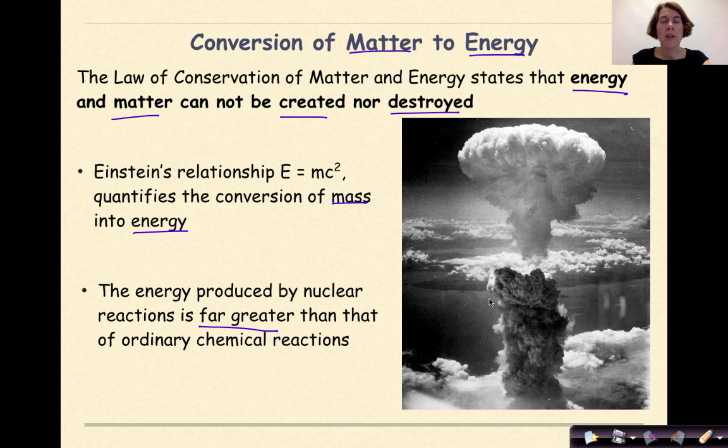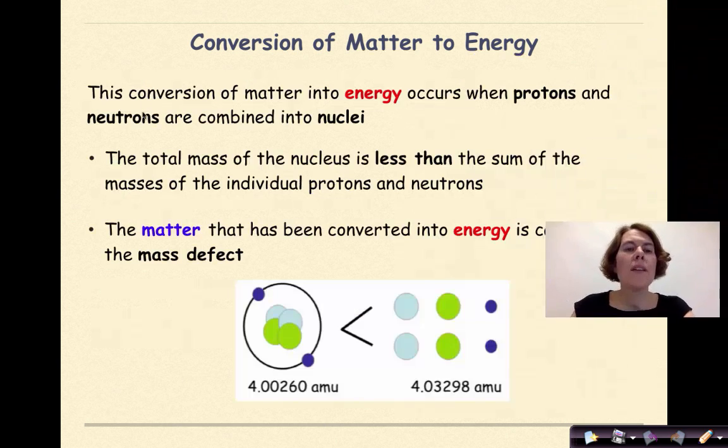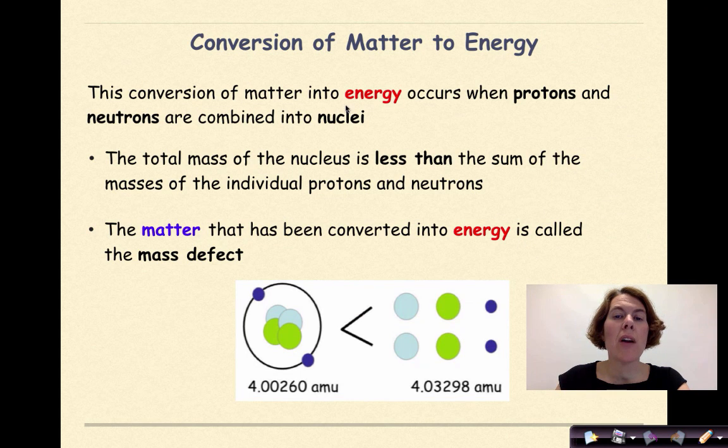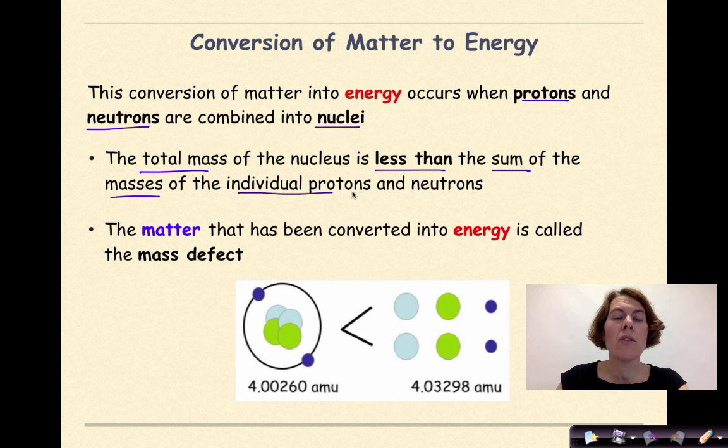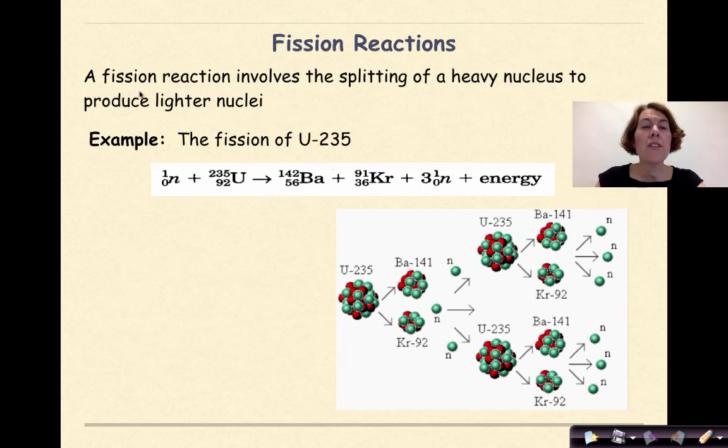This conversion of matter into energy occurs when protons and neutrons are combined into nuclei. The total mass of the nucleus is less than the sum of the masses of the individual protons and neutrons. The matter that has been converted into energy is called the mass defect. A fission reaction involves the splitting of a heavy nucleus to produce lighter nuclei.